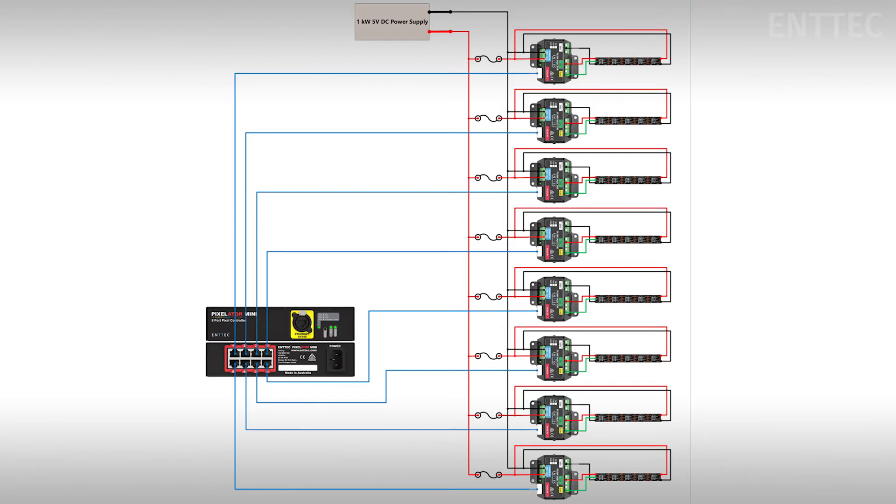If you use fuses in your power injection lines, you can ensure that when an excess current flows toward the LED tape, like in the case of a short circuit, the fuse will break and cut the flow of current, saving the controller and the rest of the circuitry.